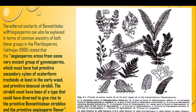Takhtajan in 1969 stated that angiosperms arose from some ancient group of gymnosperms which must have had primitive secondary xylem of scalariform tracheids at least in the early forms, and primitive bisexual strobili. The strobili must have been of a type that could diversify to give rise to the primitive Bennettitalian strobilus and the primitive angiosperm flower, resembling other body parts such as leaf, flower, branching pattern, and seeds.